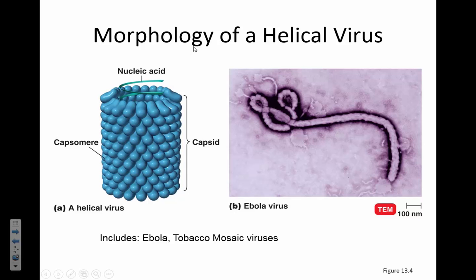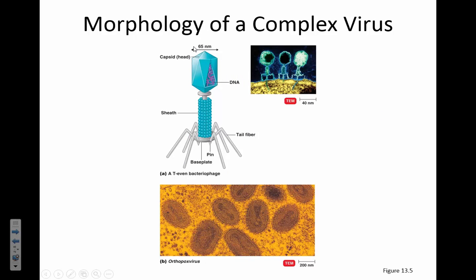Some viruses are helical—Ebola is helical. Tobacco mosaic virus is helical too. Tobacco mosaic virus is a virus that infects tobacco plants. Every living thing that exists has viruses that infect it. It's called mosaic virus because if you look at the leaves of a tobacco plant infected with this virus, they have little mosaic patterns of cell death.